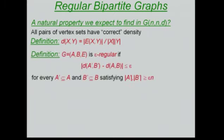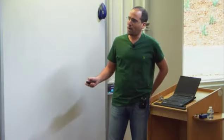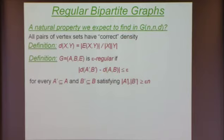I will say that the bipartite graph AB on vertex sets A and B with edge set E is epsilon-regular if the following condition holds. No matter if I pick any subset A' in A and any subset B' in B, as long as they are not too small — meaning they should contain at least an epsilon fraction of the vertices of A and B respectively — then the density between A' and B' should be more or less like the density between A and B.